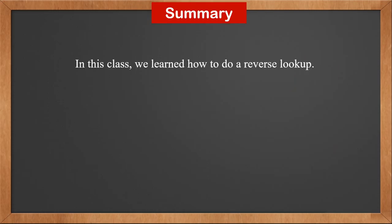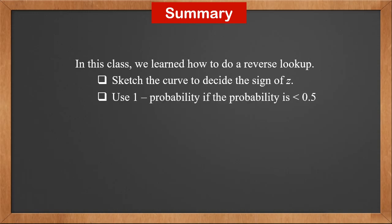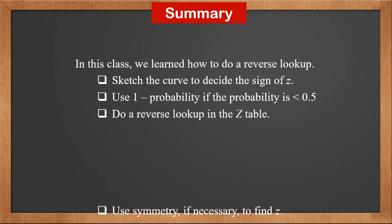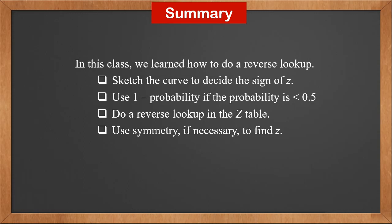In this class, we learned how to do a reverse lookup. Sketch the curve to decide the sign of z. Use 1 minus the probability if the probability is less than 0.5. Do a reverse lookup in the z table, and use symmetry if necessary to find z.